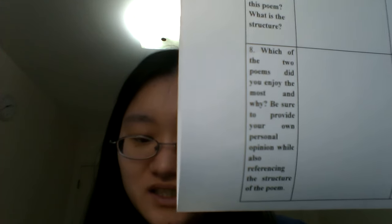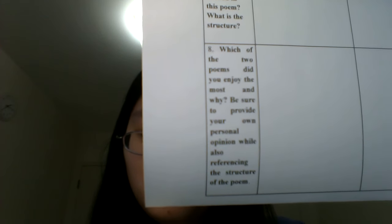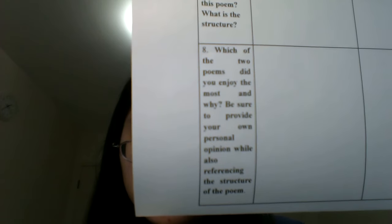Question 8: Which of the two poems did you enjoy the most and why? Be sure to provide your own personal opinion while also referring to the structure of the poem. This is only my example — you can have your own choice and idea. I enjoyed We Are Seven the most, mostly because I understood it more than the Shakespearean sonnet. I found the language easier to read and the rhyme flowed more naturally. There was also a good deal of repetition which creates a kind of echo effect in We Are Seven.